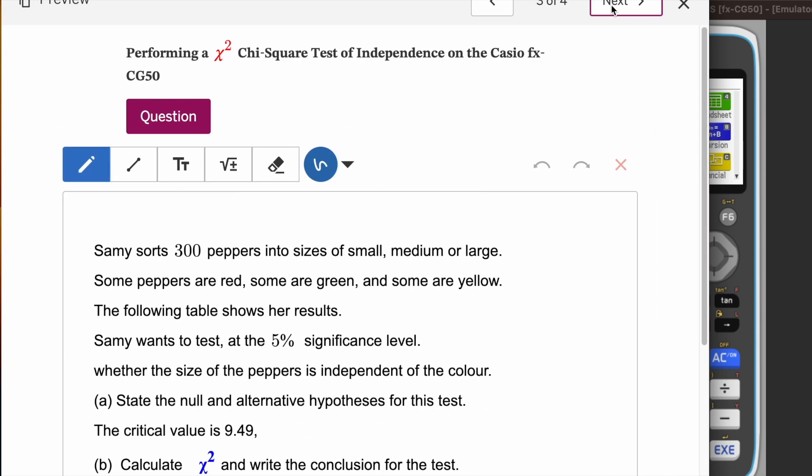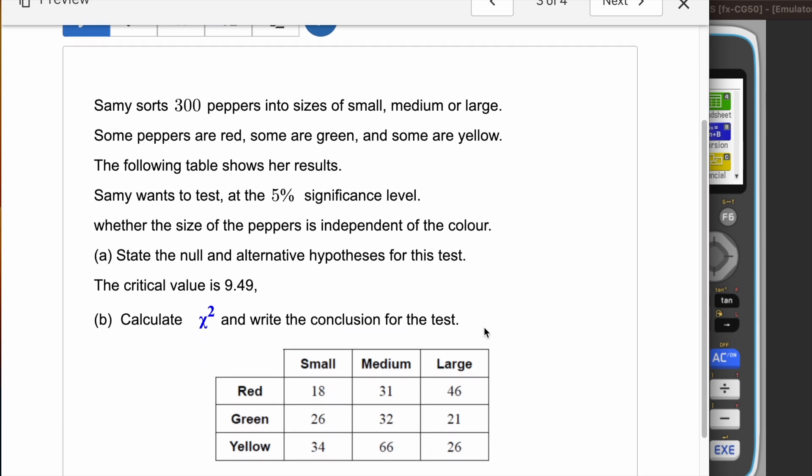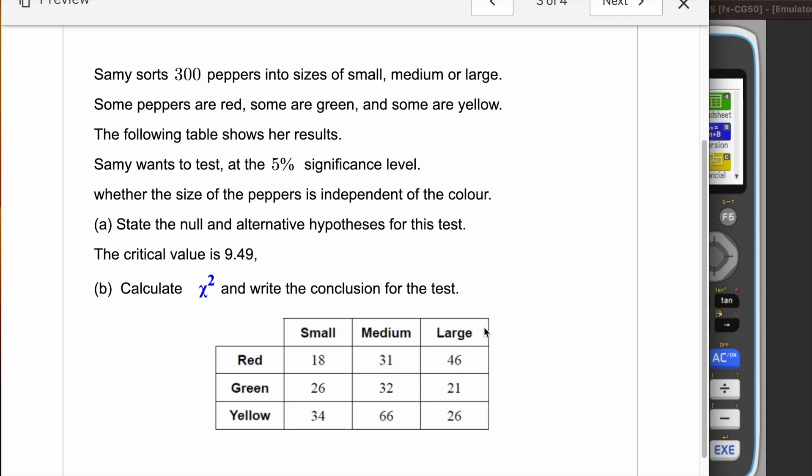Now I'm going to solve one question for you. Here's the question: Sammy sorts 300 peppers into sizes of small, medium, and large. Some peppers are red, some are green, and some are yellow. So we have two variables already here: size and color.